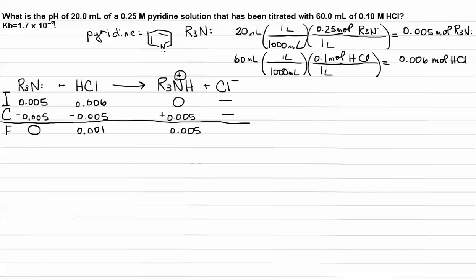Let's talk about the final molarity. And remember that molarity is moles per liter. We have number of moles. We need to determine how many liters of the solution we have. So we took 20 milliliters plus 60 milliliters, giving us a total of 80 milliliters of solution, which means that we have 0.08 liters of the solution. So to get the final molarity, we're going to divide both of these by 0.08 liters. So the final molarity of HCl is 0.0125 molar and the final molarity of the R3NH is 0.0625 molar.